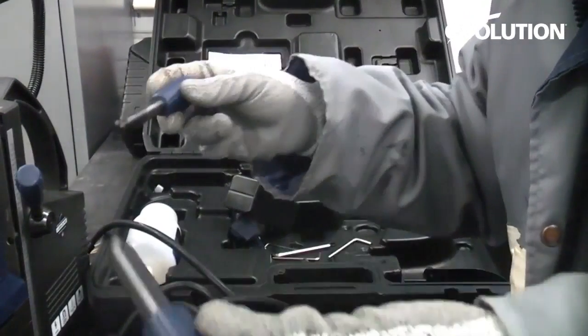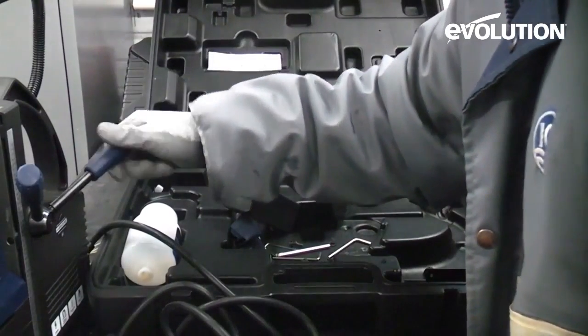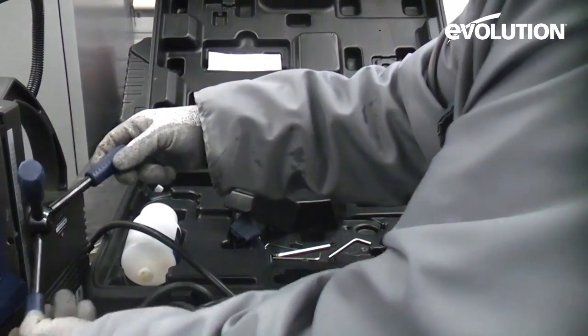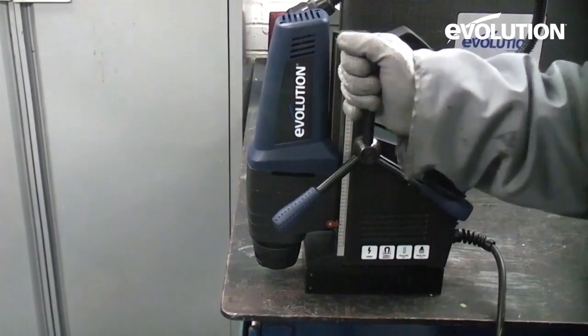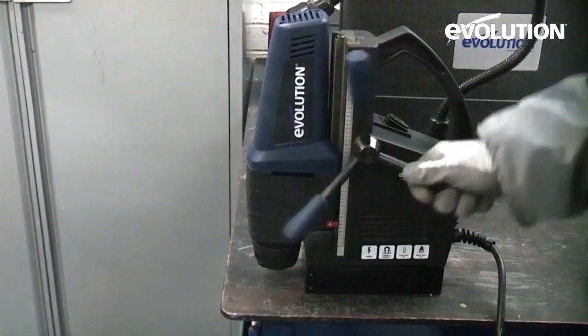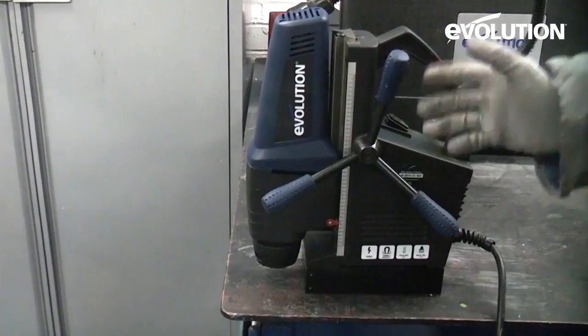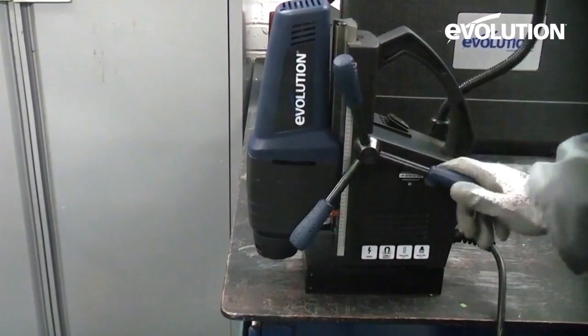We're just going to start off by screwing in all of the handles. If you've never used a mag drill before, these are very handy machines. They can save you a lot of time and a lot of hassle when you're drilling metal on site.